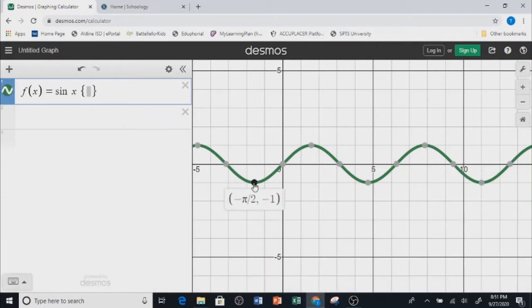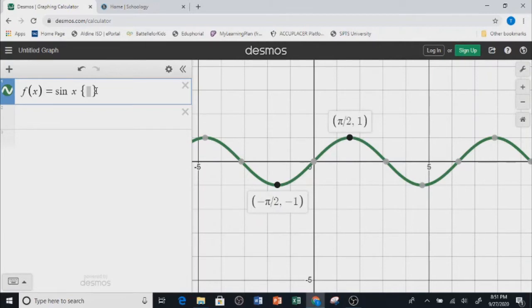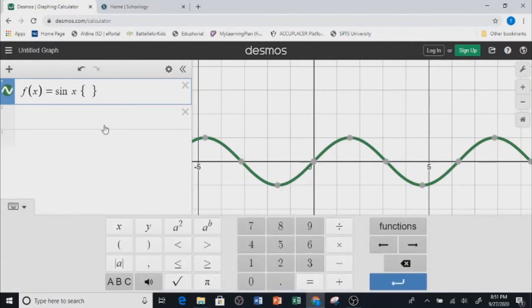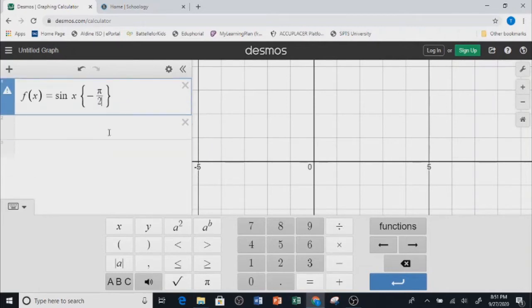Let's say I want to restrict the domain from negative π/2 to π/2. All I need to type here is negative π/2. So if you just say pi, it becomes negative π divided by 2, which is less than or equal to x.